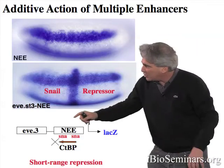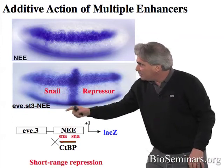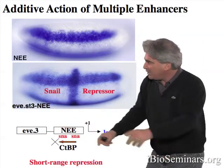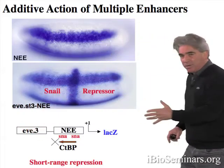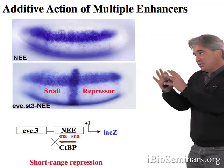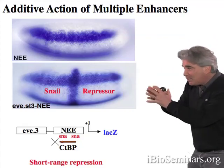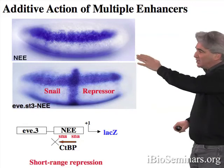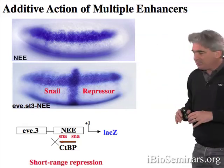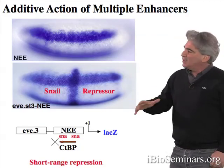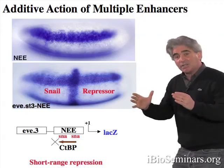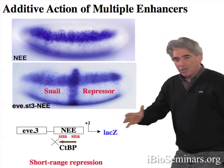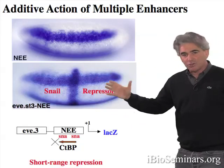The reason why the two enhancers work additively is because of short-range transcriptional repression. The SNAIL repressor binds to the NEE to keep it off in the bottom regions of the embryo, but the binding of SNAIL to the NEE does not interfere with the neighboring EVE stripe three enhancer, which is expressed just fine in the bottom regions where there are high levels of the SNAIL repressor. Repressors only inhibit the activators to which they are in proximity. This permits different enhancers to work independently and give an additive pattern of expression. To summarize: enhancers are typically 500 base pairs in length, contain binding sites for both activators and repressors, and thereby produce sharp on-off patterns of gene expression. Multiple enhancers can work additively to produce complex patterns due to short-range transcriptional repression.